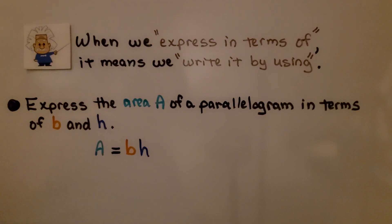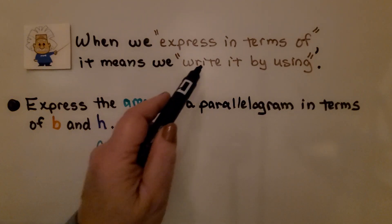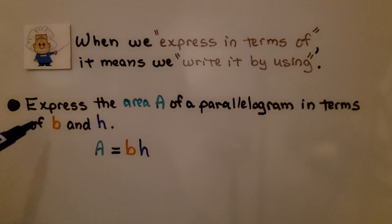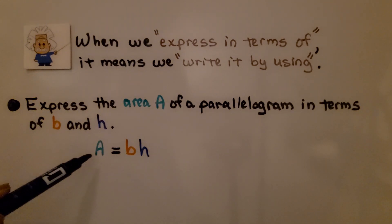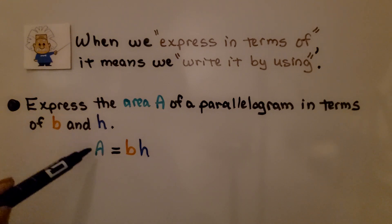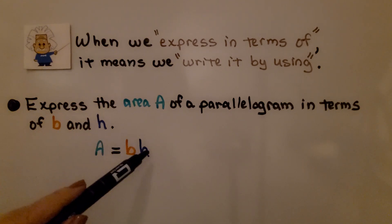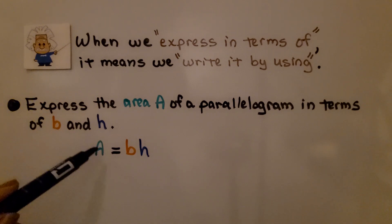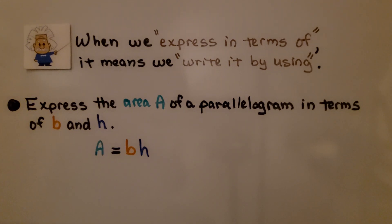When we say "express in terms of," it means we write it by using those variables. So if we need to express the area A of a parallelogram in terms of B and H, we write A using B and H: area equals base times height, so A equals BH. That expresses it in terms of B and H.